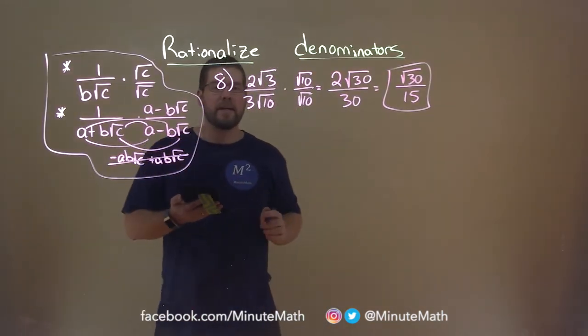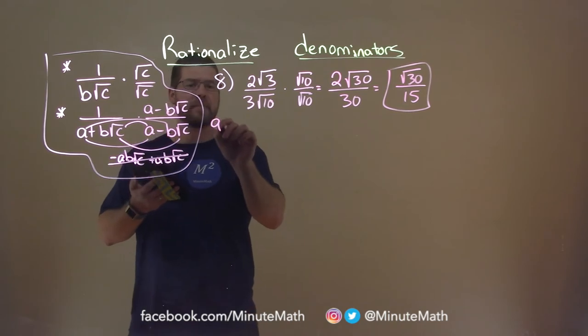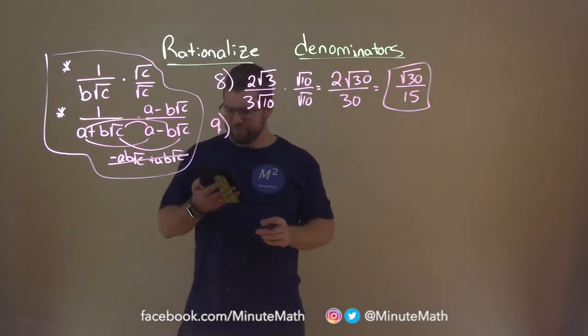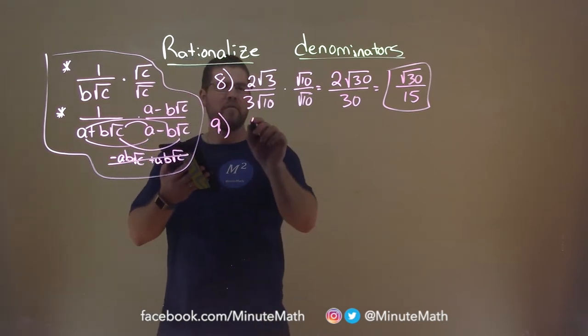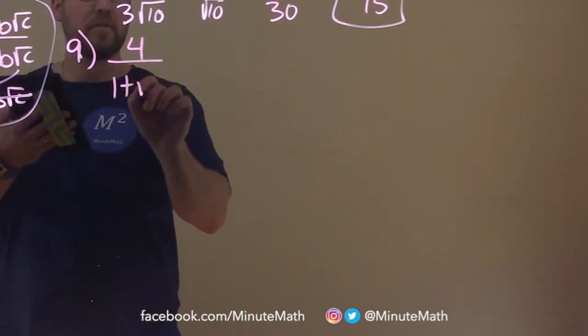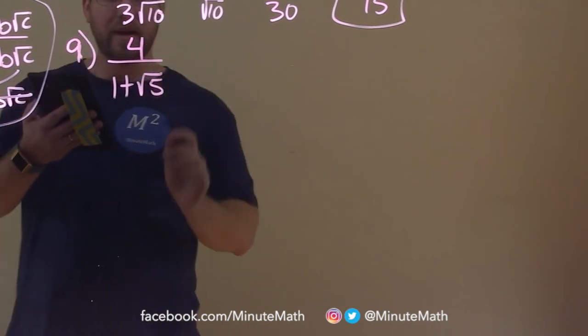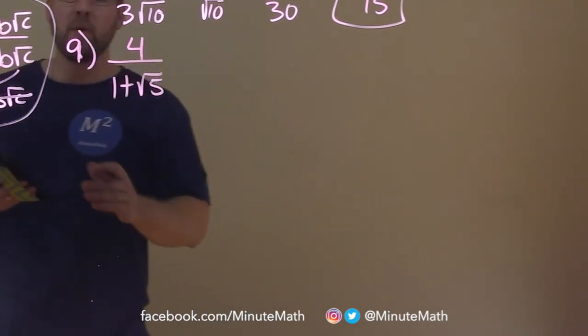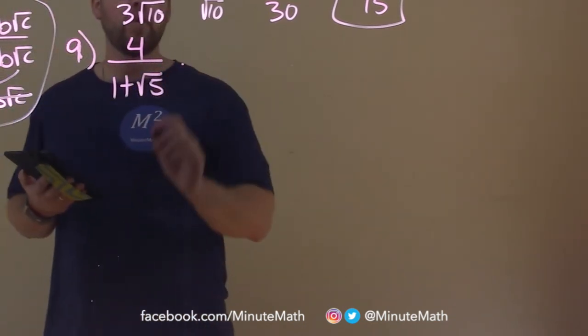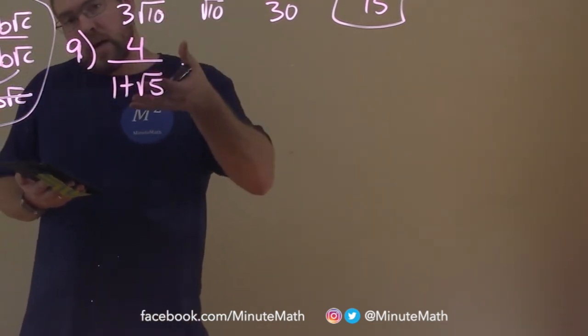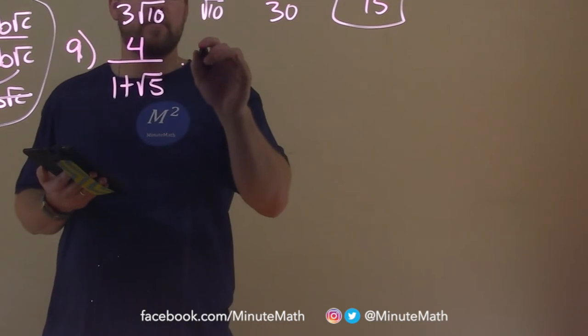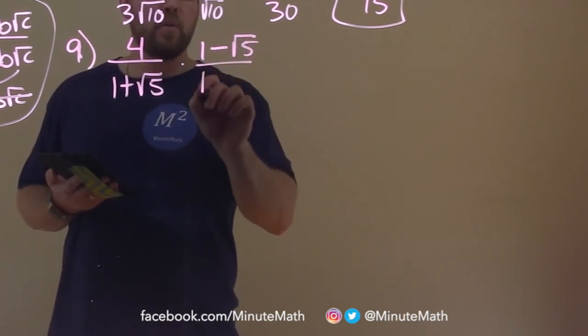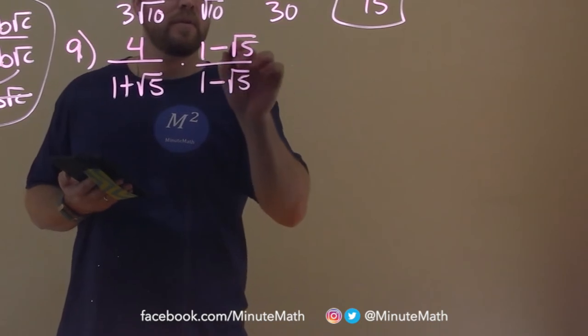So let's try another one here, number 9. And this one's going to apply the second part of our rule here. Well, we have 4 over 1 plus square root of 5, and we have to write this in simplest form. Well, we're going to apply our conjugate here, and we're going to multiply this expression by our conjugate, which is 1 minus square root of 5 over 1 minus square root of 5 here.